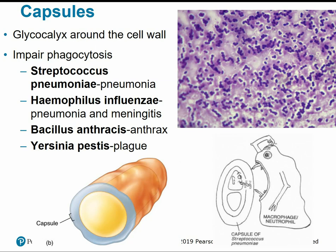Some common pathogens that produce capsules include Streptococcus pneumoniae, anthrax, plague, and meningitis-causing bacteria. From lab, we did the capsule stain — the capsules appear as clear halos around our stained cells.